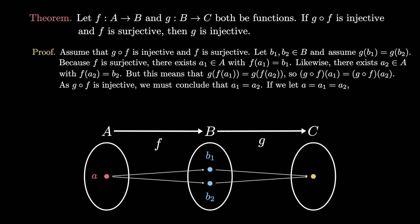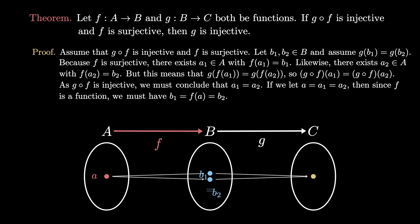But if we revisit our picture, we see that a maps to two elements, and therefore f(a) must be b₁ and f(a) must be b₂, so b₁ must equal b₂. Because b₁ and b₂ were arbitrary, and we proved that if they map to the same element they must be equal, we conclude that g is an injective function by definition.